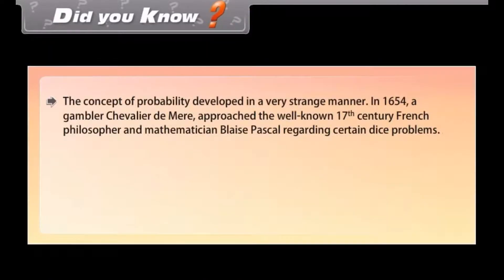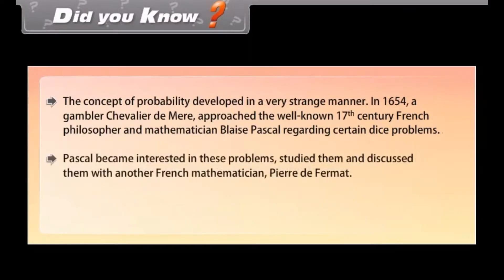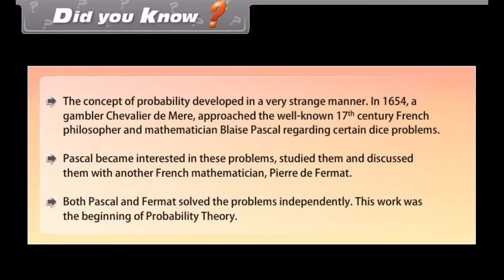Did you know? The concept of probability developed in a very strange manner. In 1654, a gambler, Chevalier de Mer, approached the well-known 17th century French philosopher and mathematician Blaise Pascal regarding certain dice problems. Pascal became interested, studied them, and discussed them with another French mathematician, Pierre de Fermat. Both Pascal and Fermat solved the problems independently. This work was the beginning of Probability Theory.